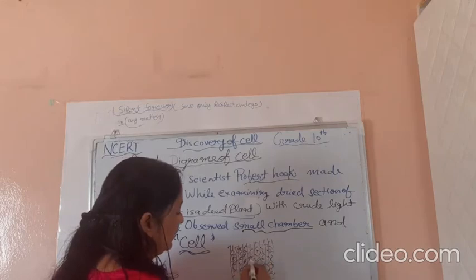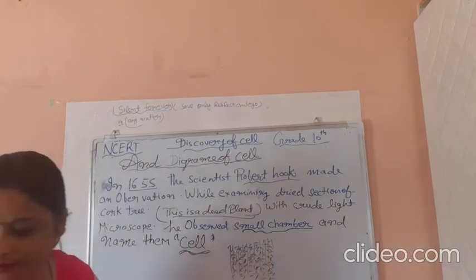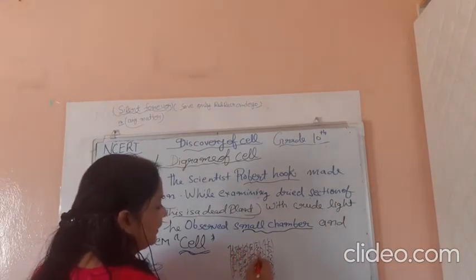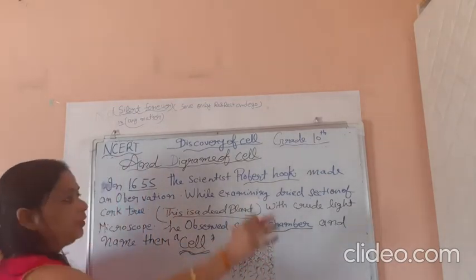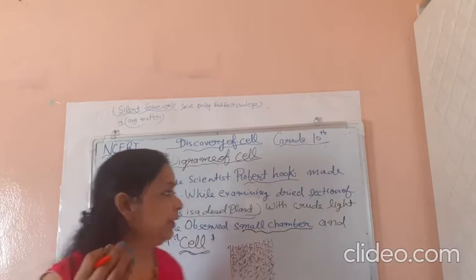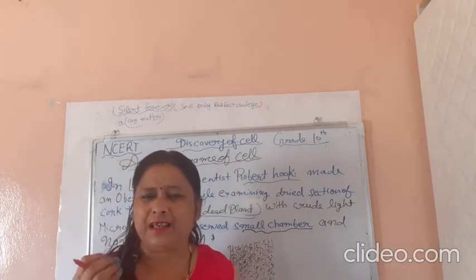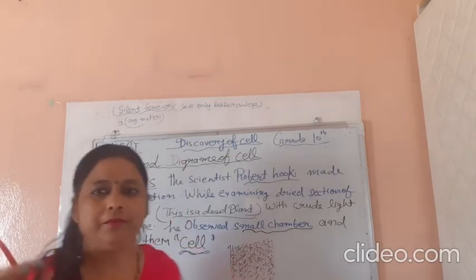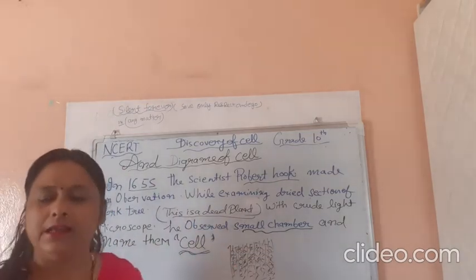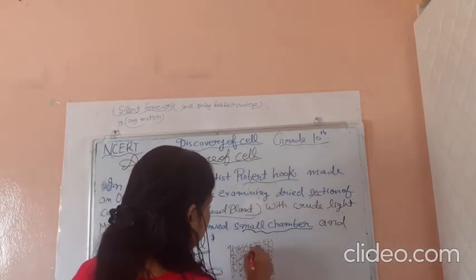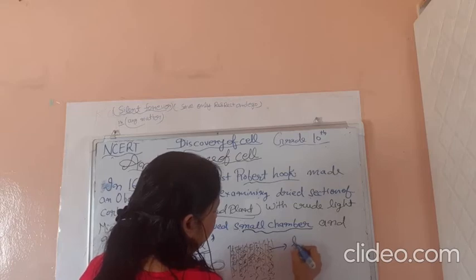These little, little chambers found in cork — just like little boxes — found in the cork tree, he named them cell. So, this is called cell. Little, little chambers discovered by Robert Hooke in 1665. Keep this in mind.